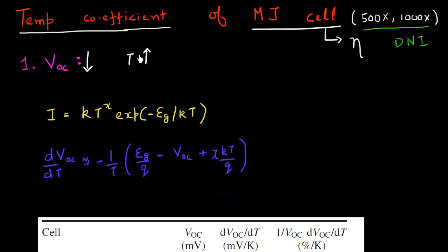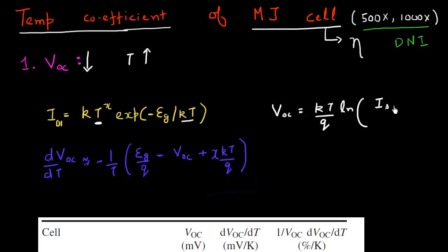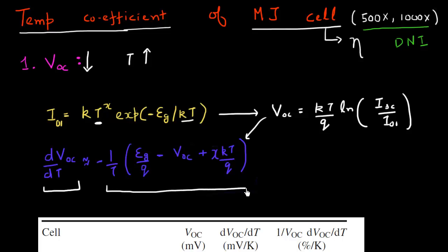The decrease in VOC is what essentially causes a decrease in efficiency. I can represent that decrease in VOC by a set of mathematical equations. If I represent my current due to generation and recombination by an equation where the temperature dependence is given by a power dependence and an exponential term, then I can express my open circuit voltage. Taking the derivative essentially gives the temperature dependence of VOC, which has a negative term — so VOC degrades as temperature increases.